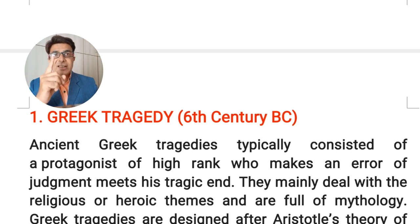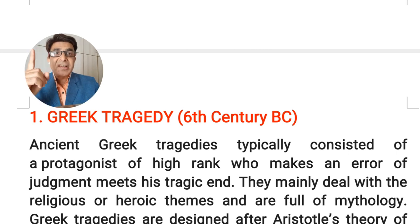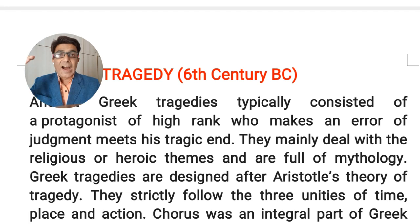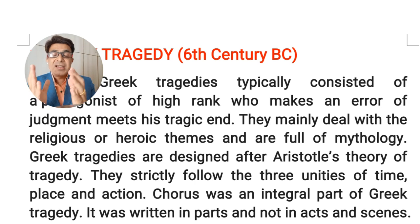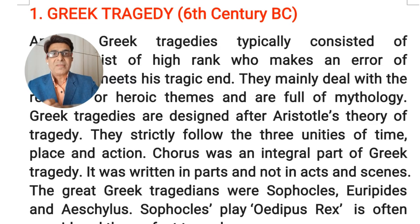We begin with Greek tragedy, which is considered the most ancient tragedy in literature, existing during the sixth century BC — about 2600 years ago. In these Greek tragedies, the protagonist is of a very high rank: either a king, queen, prince, or great warrior. Greek tragedies are mostly religious or have heroic themes, and they include the element of mythology.